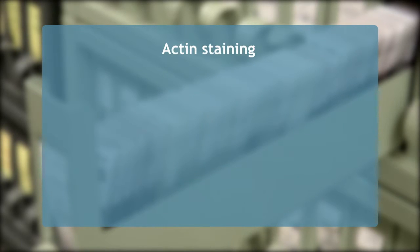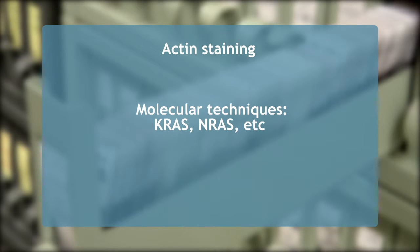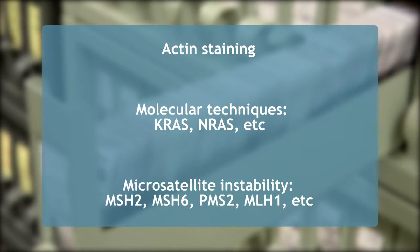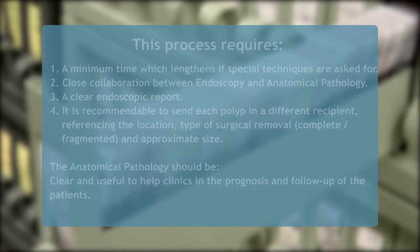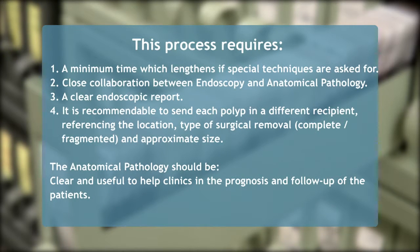Special techniques include actin staining, molecular techniques — KRAS, NRAS, etc. — and microsatellite instability markers such as MSH2, MSH6, PMS2, MLH1, etc. This process requires a minimum time, which lengthens if special techniques are requested.